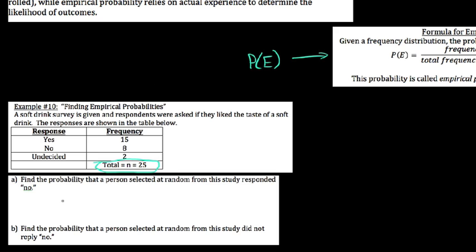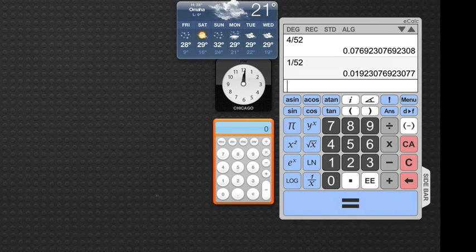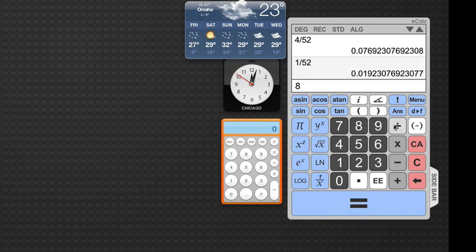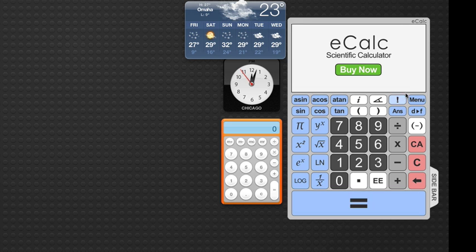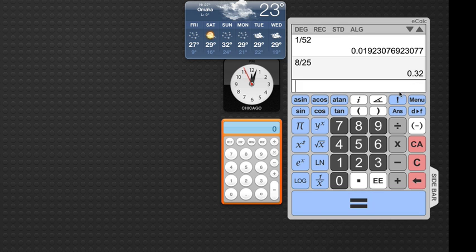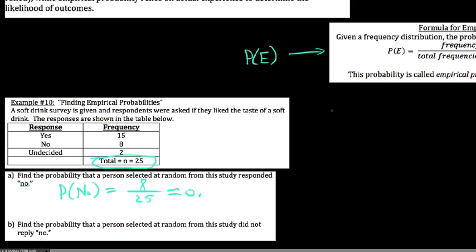So the probability they said no. The entire sample space consisted of 25 people. Of the people that answered, out of all of them in our sample space, there were 8 people that gave us the event of no. So we say 8 out of 25. Let me calculate this here, 8 divided by 25. So we get 32%. So 0.32, which is approximately 32%.